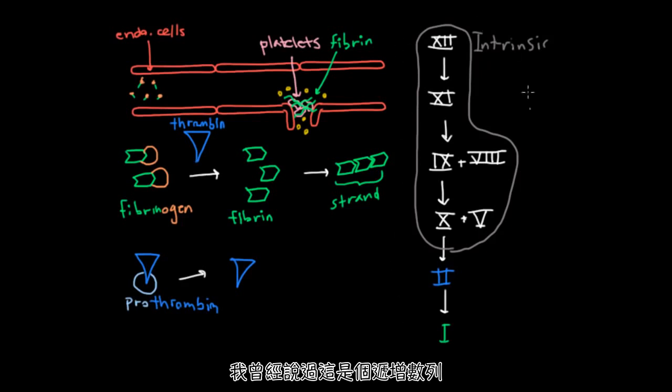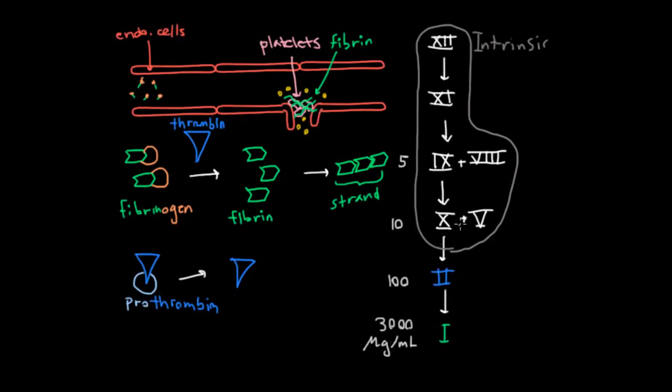Now, I said that this was an amplification sequence, and so I just wanted to share a little data to show that that's true. So it turns out that this guy, Factor 1, or fibrin, in its inactivated form, which is fibrinogen, has about 3,000 micrograms per milliliter in blood, while this guy has about 100 micrograms per milliliter in blood. Meanwhile, 10 has about 10 micrograms per milliliter in blood, and Factor 9 has about 5 micrograms per milliliter in blood. And so you can really see that as you go down this thing, you're increasing your amounts in your blood, which reflects the fact that you're also going to increase the number of active forms of these when you have a clot.